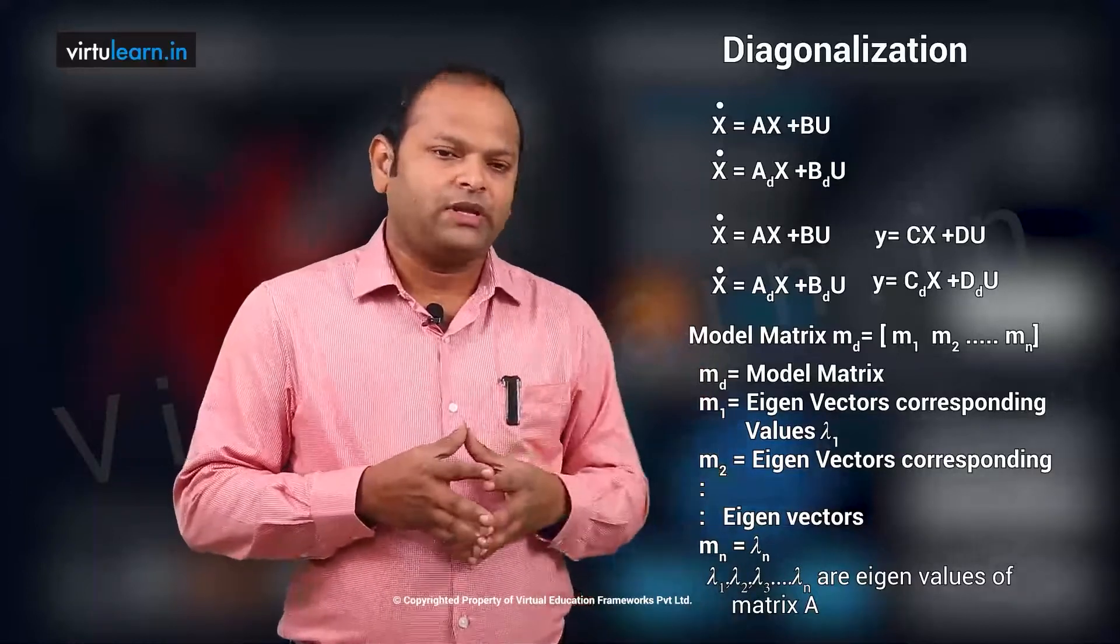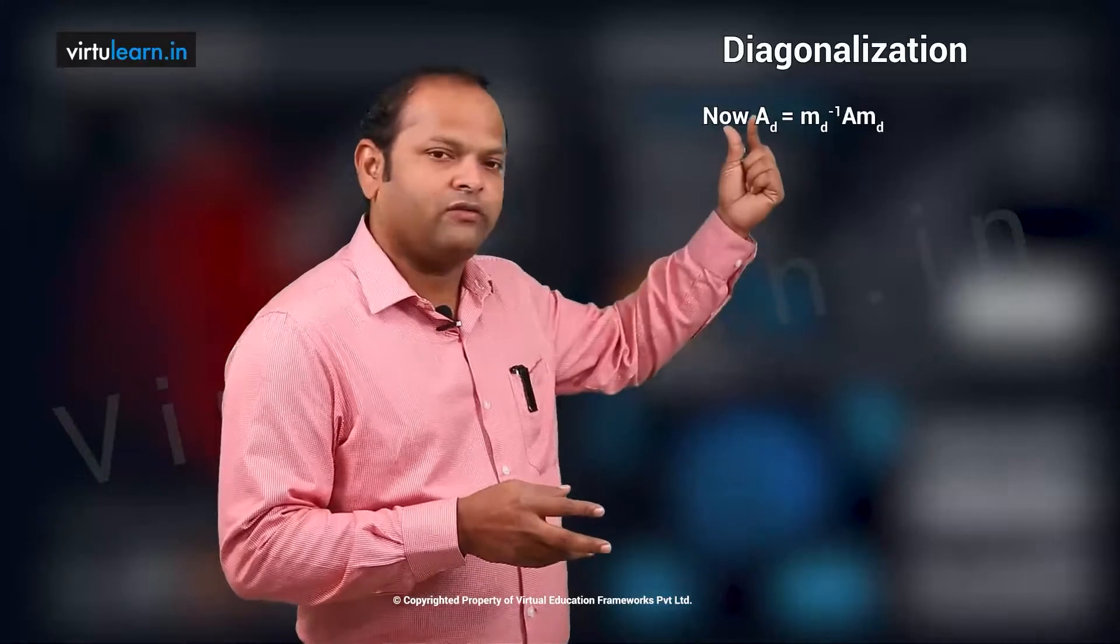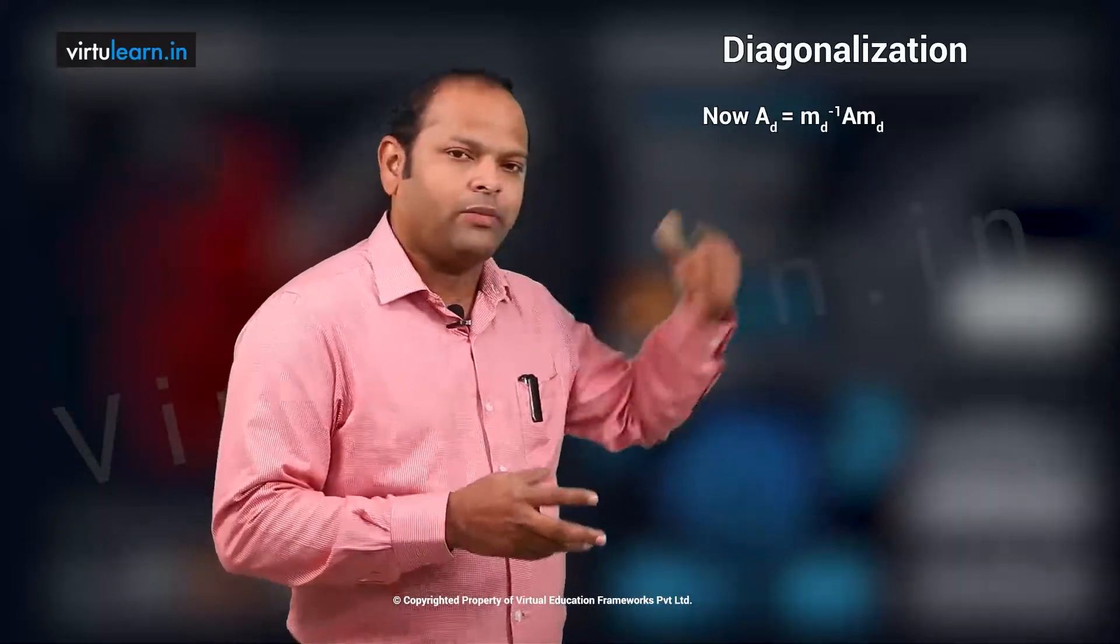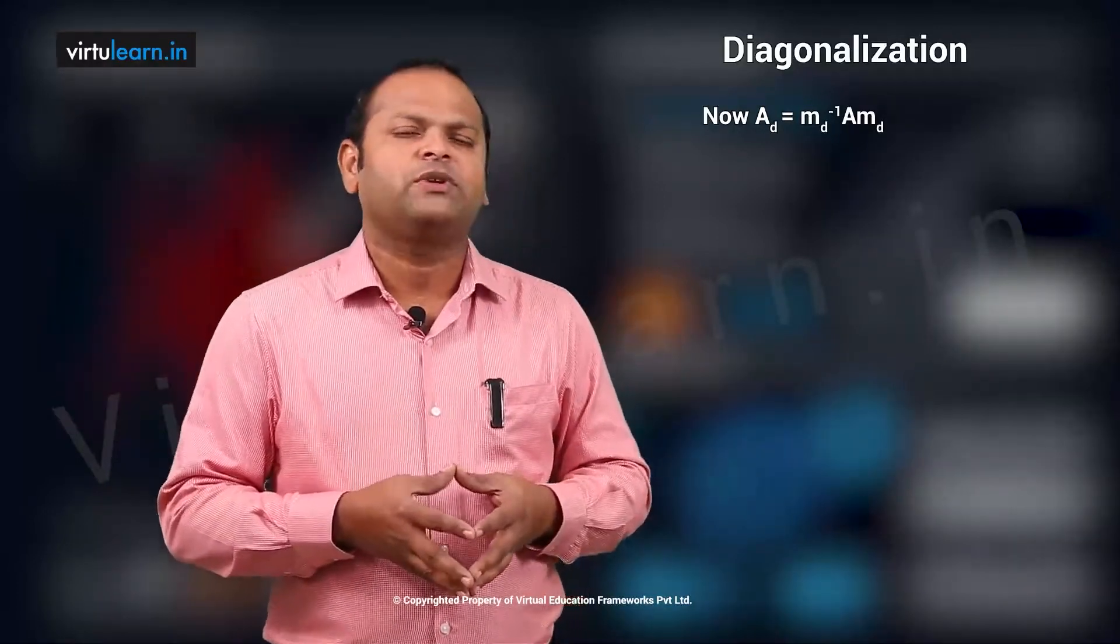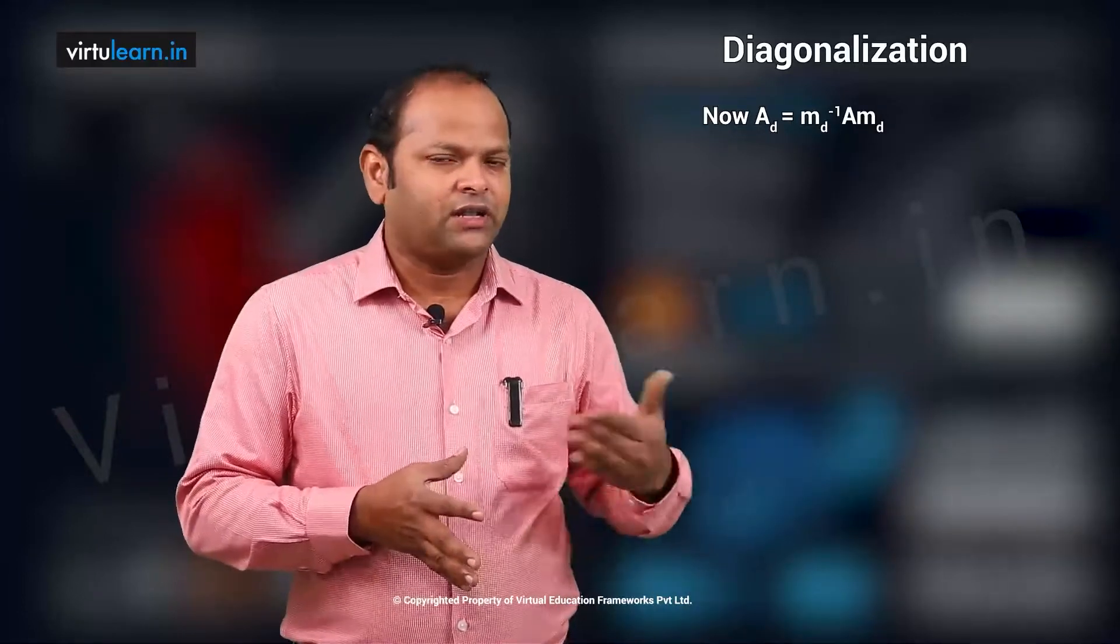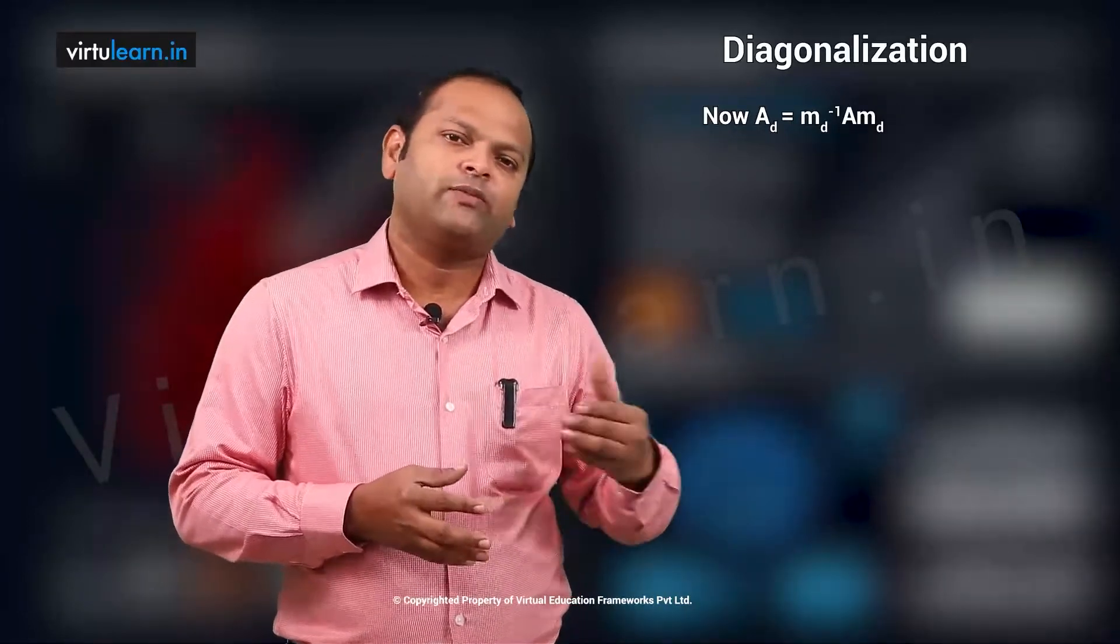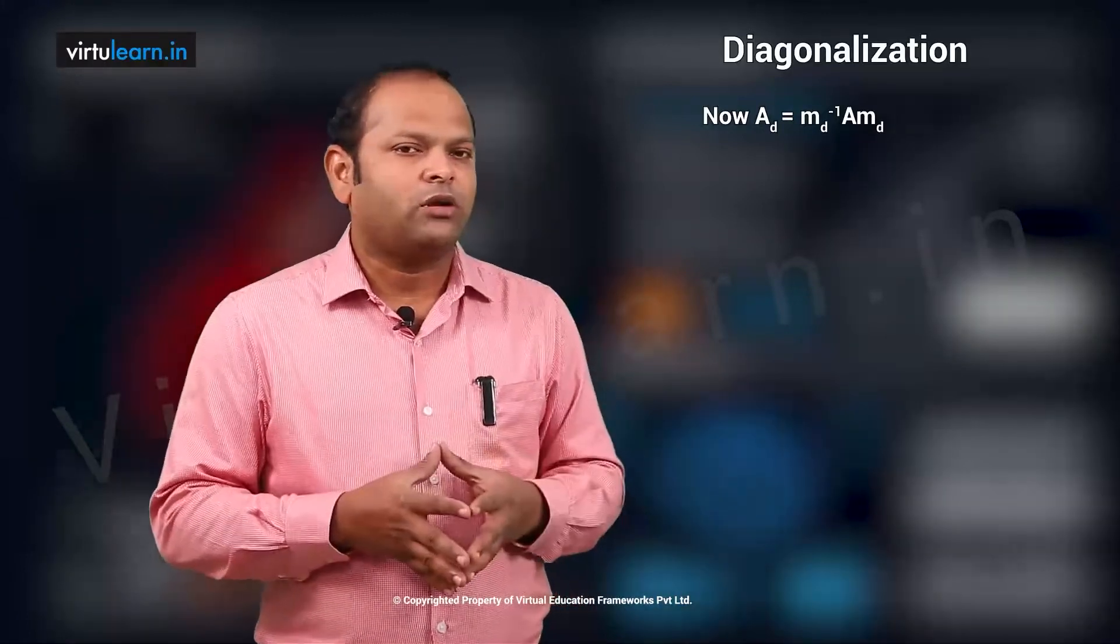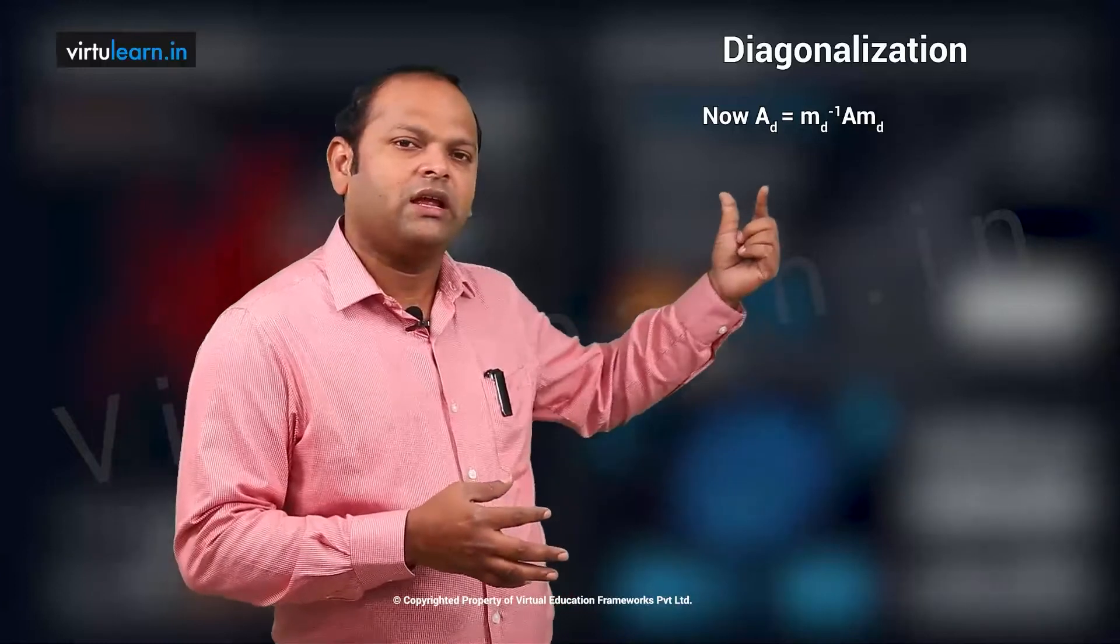Now what will be the a_d matrix? Then we can write directly a_d is equal to m_d inverse a m_d. We know the model matrix with the help of the eigenvectors and again those eigenvectors from the eigenvalues of the system which means take the a matrix, find the eigenvalues and also find out corresponding eigenvectors from the model matrix. Once the model matrix is available, I can easily write a_d is m_d inverse a m_d.